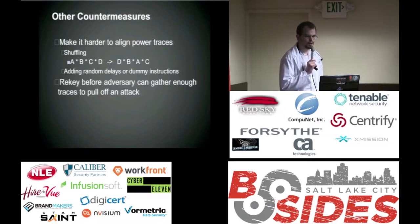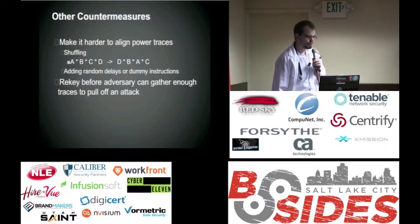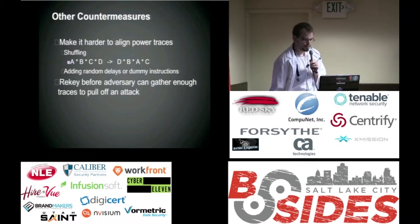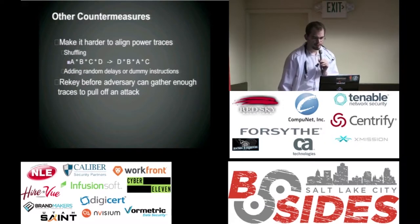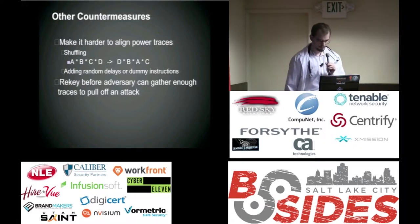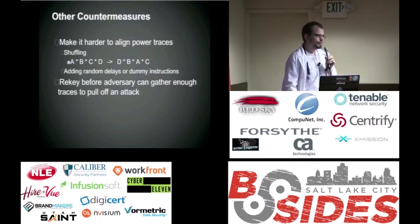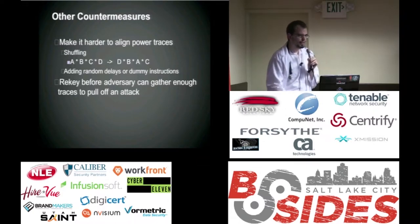Some other countermeasures include making it harder to align power traces, since DPA requires collecting many traces. If you shuffle around the order of operations where it doesn't matter — like multiplication — and do that differently every time, when attackers average them together they won't get anything useful. You can also add random dummy functions or delays to foil alignment. Another strategy is at the protocol level: accept that someone may eventually compromise your system, so you change the key frequently, hopefully before they collect enough traces to pull off an attack.